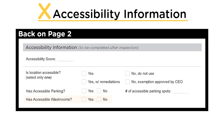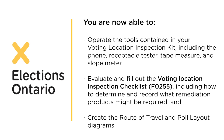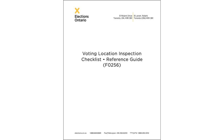Congratulations! You have reached the end of the training. You are now able to: 1. Operate the tools contained in your voting location inspection kit, including the phone, receptacle tester, tape measure, and slope meter. 2. Evaluate and fill out the voting location inspection checklist F-0255, including how to determine and record what remediation products might be required. And 3. Create the route of travel and poll layout diagrams. Topics in this training are covered in detail in the Voting Location Inspection Checklist Reference Guide F-0256 and in EOpedia. Please refer to the guide for assistance when conducting an inspection.